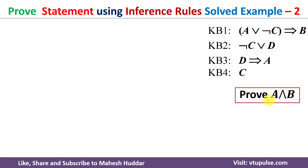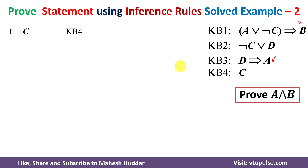To prove A and B, if you look at these knowledge bases, A is present in the third knowledge base and B is present in the first knowledge base. We need to derive A as well as B.